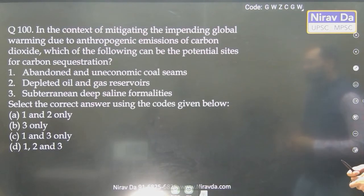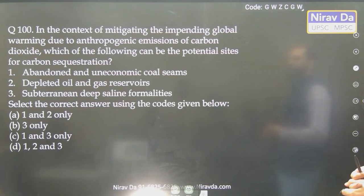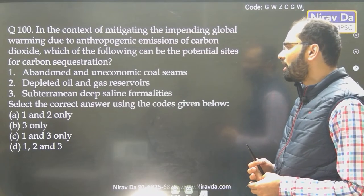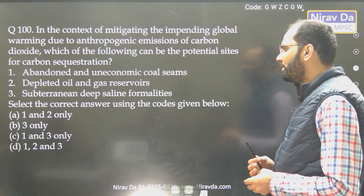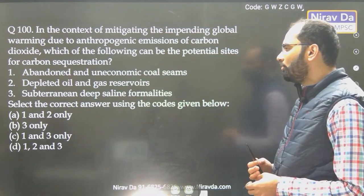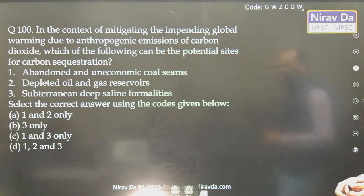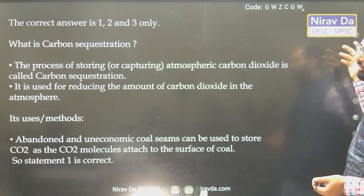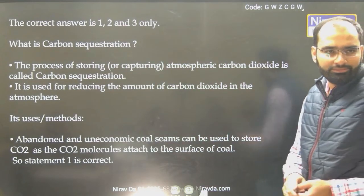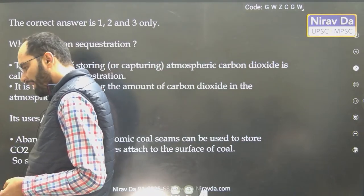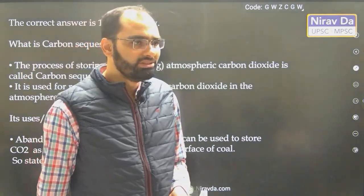In context of mitigating the impending global warming due to anthropogenic emissions of carbon dioxide, which of the following can be potential sites for carbon sequestration? Abandoned and uneconomic depleted oil reserves, subterranean saline formations — you can do carbon sequestration everywhere. So today this short session will end here. Tomorrow we'll have a long session where we cover maximum things.